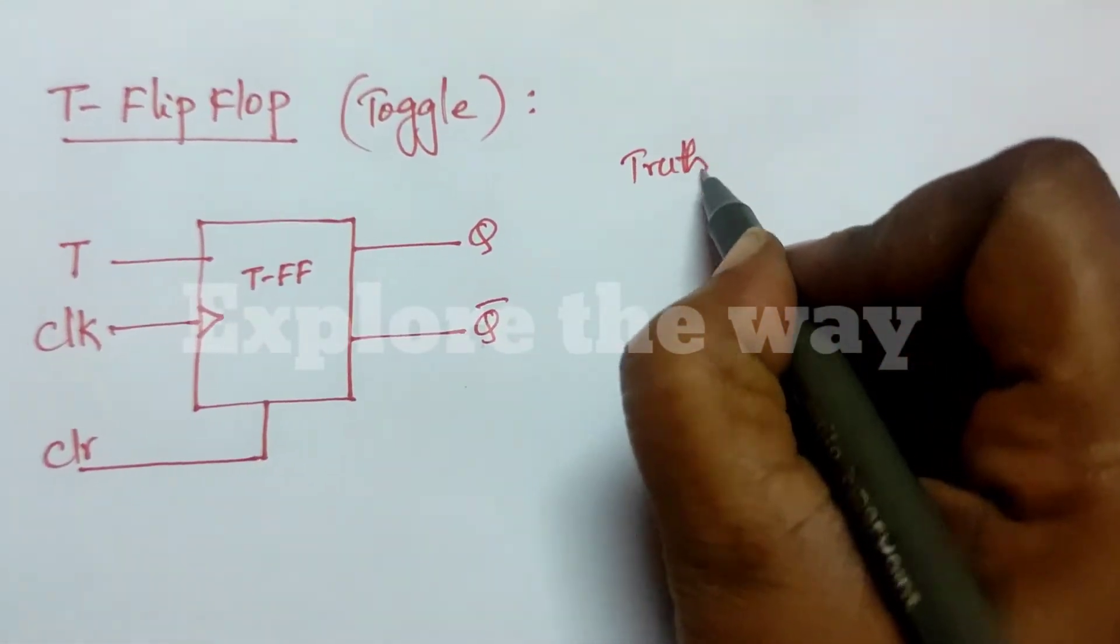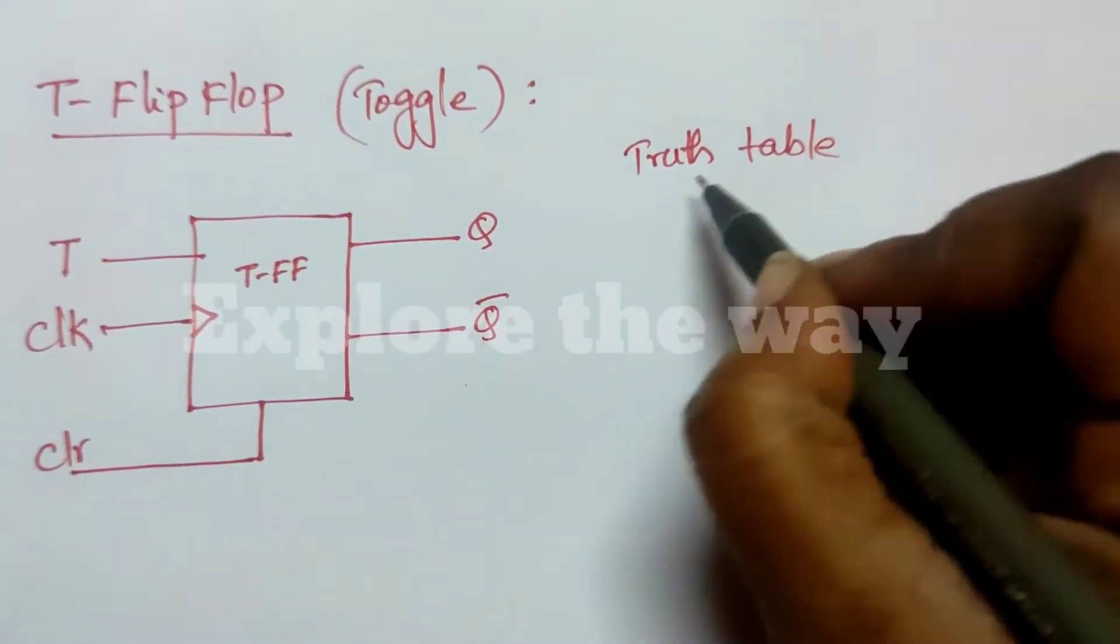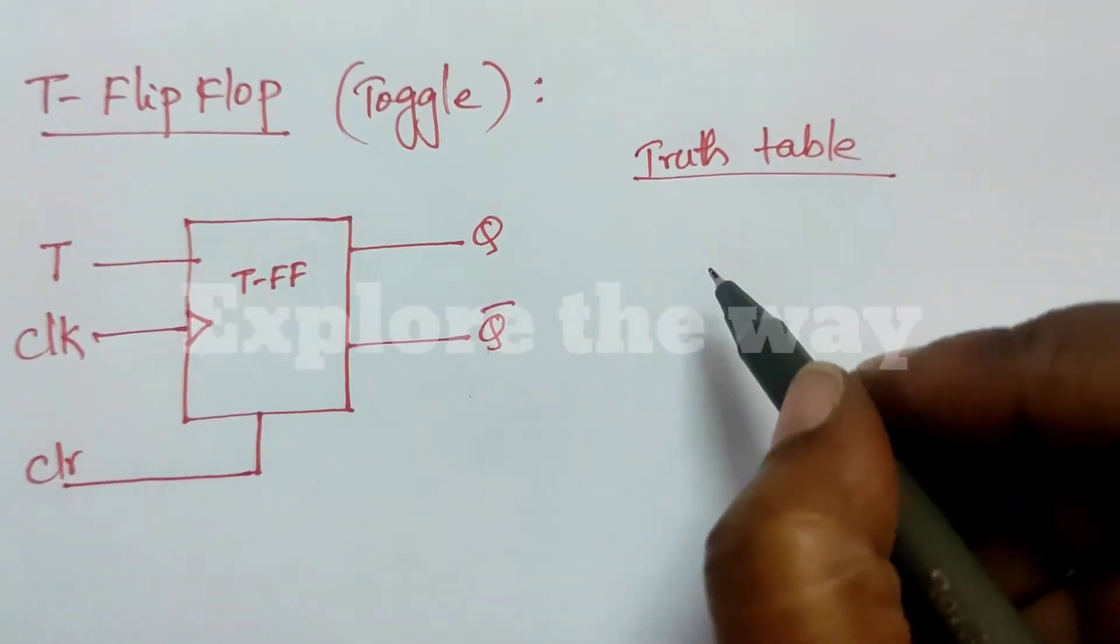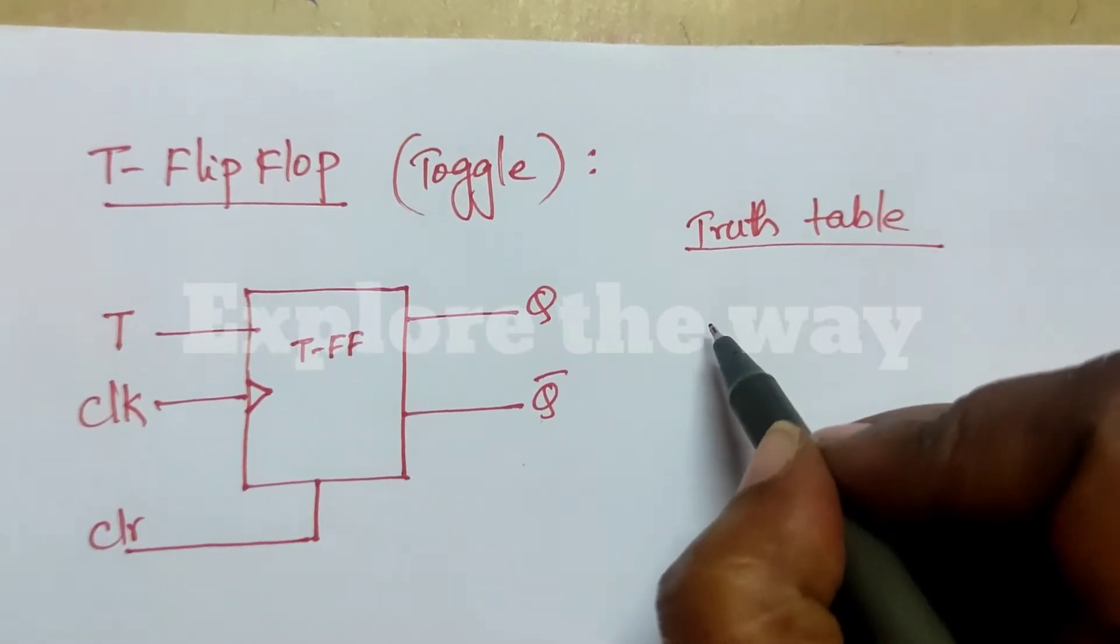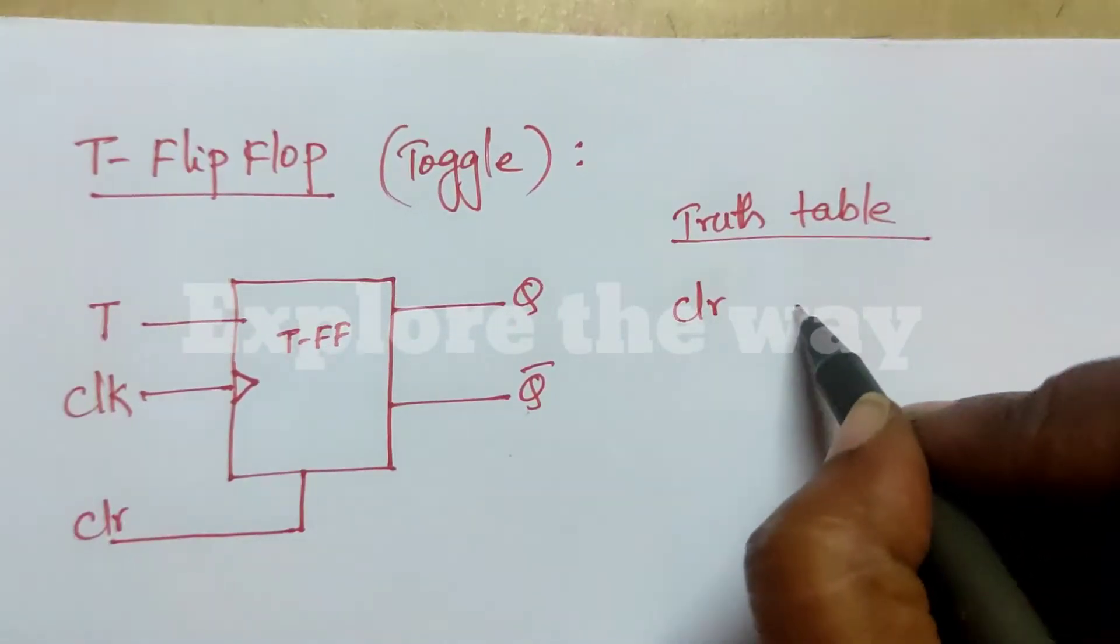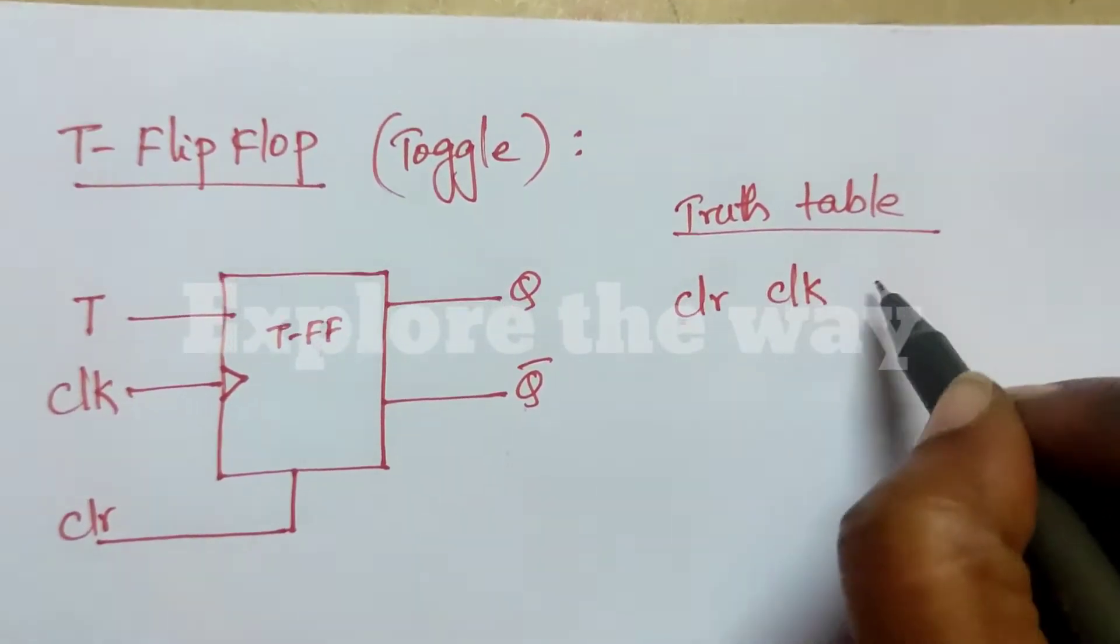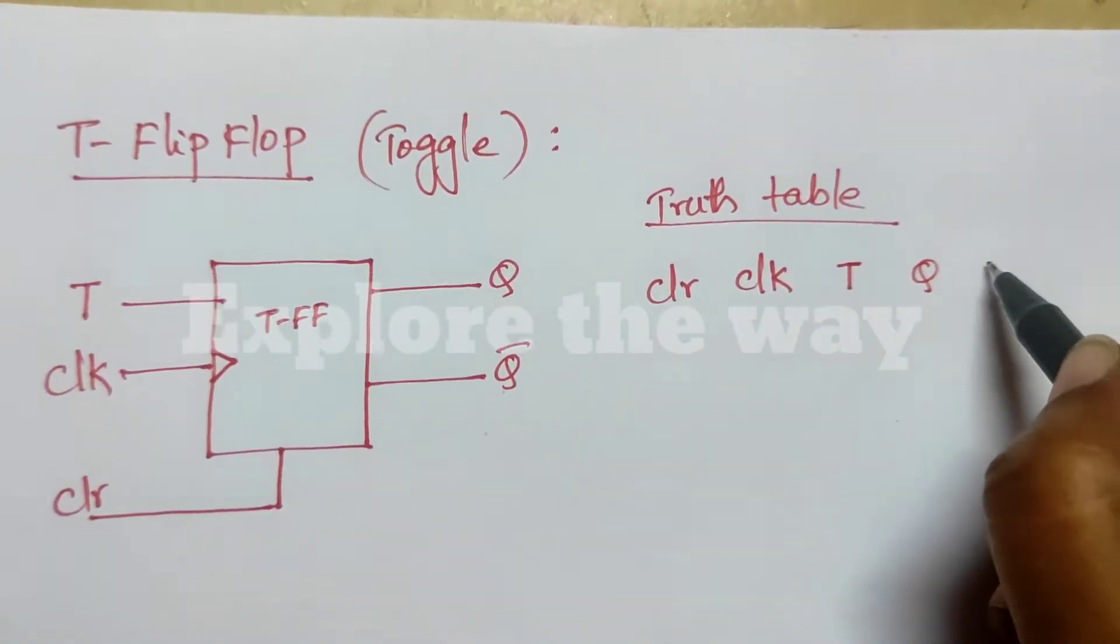The behavior of any logic circuit can be described by using truth table. It has clear, clock, T, Q.